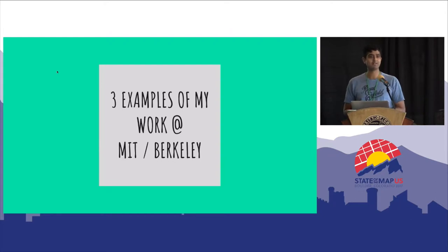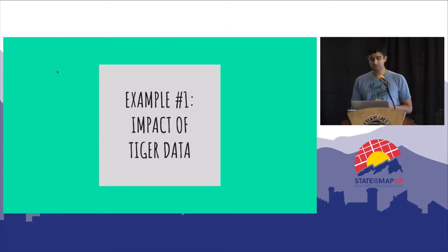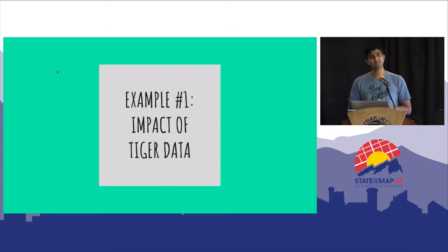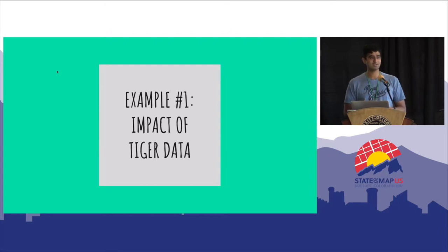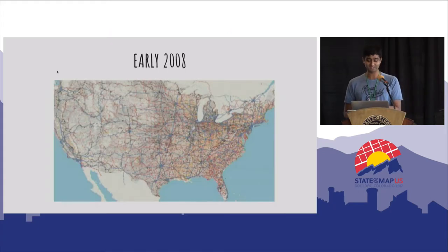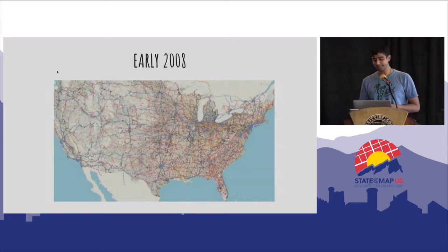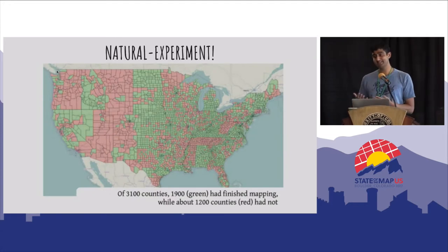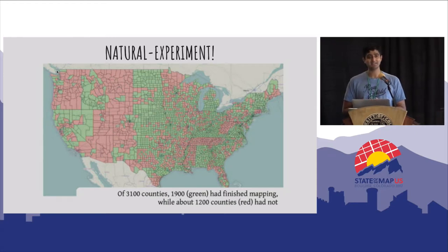Let me give you three examples of what this looks like in practice. The first project looks at the old debate of imports — in particular, what Tiger imports did to the US community over a ten-year period. To understand this ideally one would randomly assign Tiger data to some places and not others, then trace out over ten years what happened, which is really hard to do. Fortunately, this is OSM right after the Tiger import in 2008 — you can see how Canada and Mexico are empty but the US looks really filled in. My work basically discovers, thanks to some of Eric Fisher's maps, that Tiger quality when it came in varied a lot.